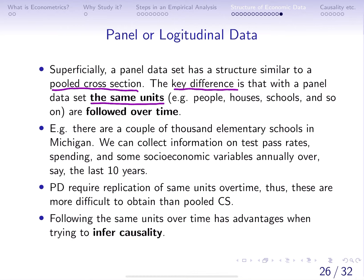For example, the same set of individuals, people, houses, schools, or countries are followed over time. Let's take an example: there are a couple thousand elementary schools in Michigan, and we can collect information on test pass rates, spending, and other types of socioeconomic variables annually over the last 10 years. If we follow the same schools over time for 10 years, we have created a panel or longitudinal data set.